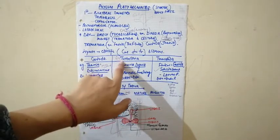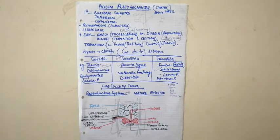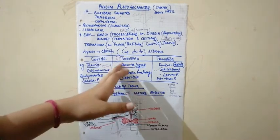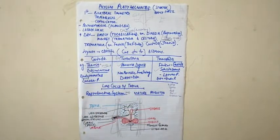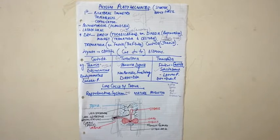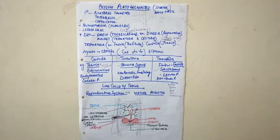The class Turbellaria does not have any larval stages and is not a parasite. You can remember it by the mnemonic 'stop' — they are not disturbed by any larval form. Their life cycle is very simple; they do not have to transform into different forms.